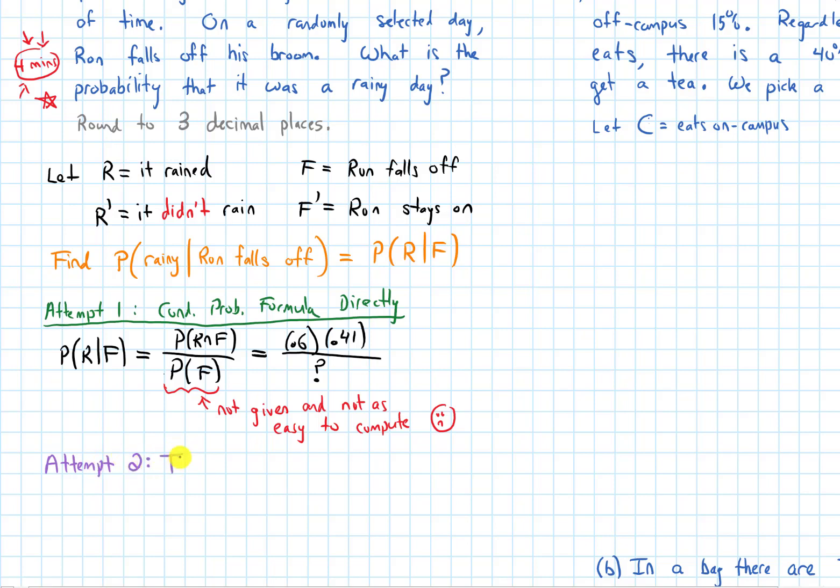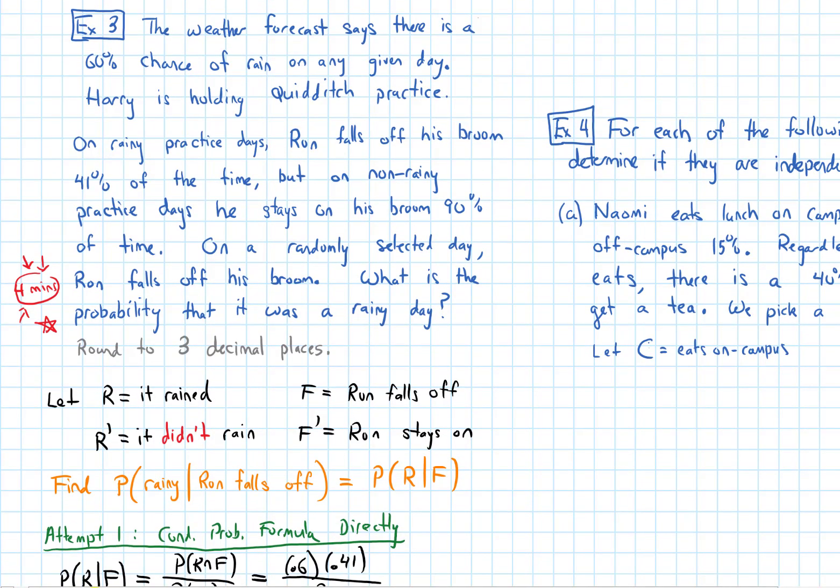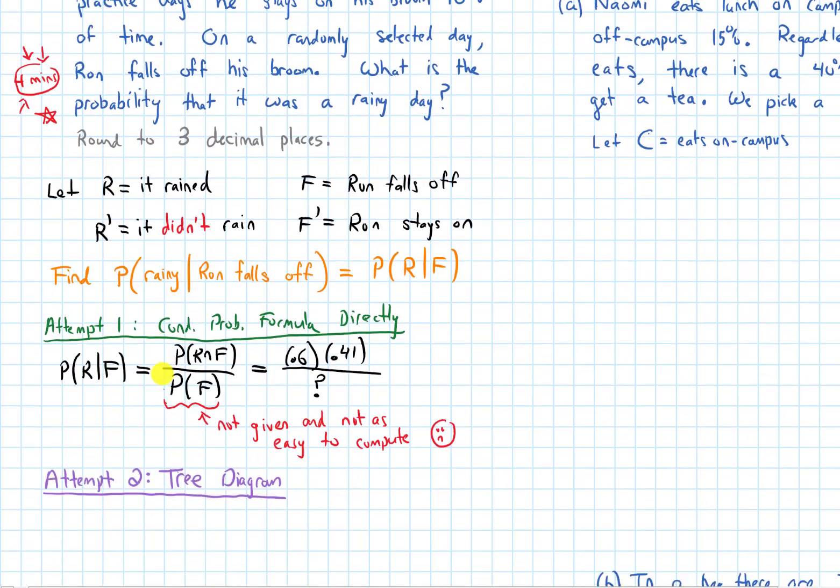I wanted to point out this first attempt because this is a really common thing that will sometimes happen in conditional probability problems. We may try to do it using the formula directly, but we'll run into something and get stuck. That's a common indicator that I might want to try a tree diagram. Another thing that's suggesting to do a tree diagram is the fact that there's sort of two stages. There's does it rain or not rain, and then there's the second stage, which is does Ron fall off or does he stay on.